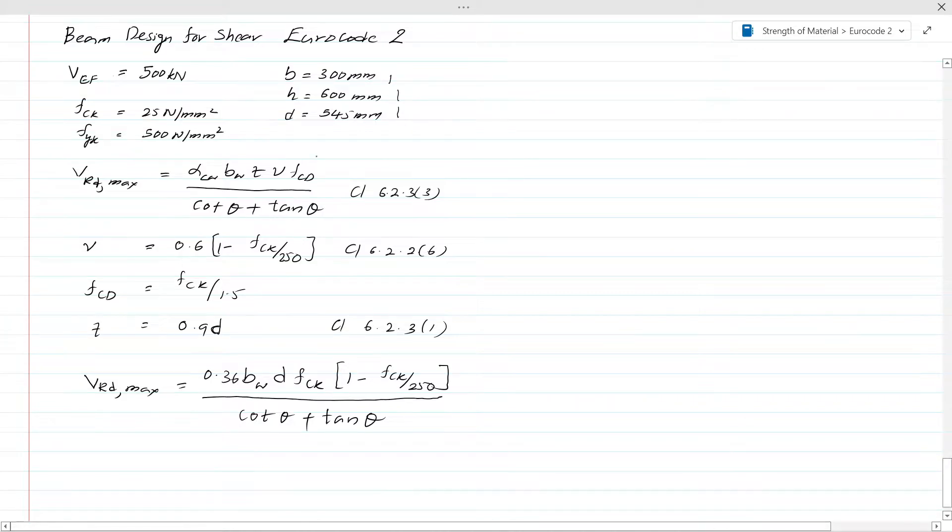First we have to calculate the maximum shear according to its properties. There is a limitation given in Eurocode clause 6.2.3 under section 3. So it is VRd,max equals alpha_cw × b_w × z × ν × f_cd divided by (cot θ + tan θ). Let's find out the simplified form of these equations. ν can be calculated according to Eurocode, these equations are given in 6.2.2 and 6.2.6.